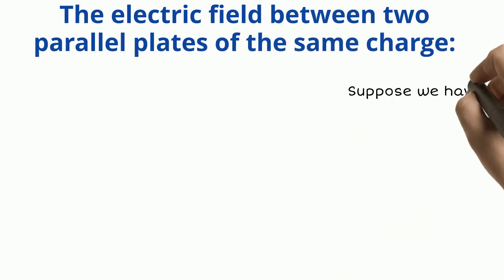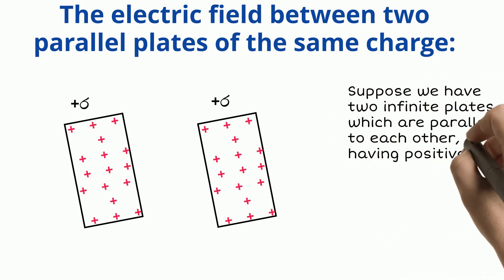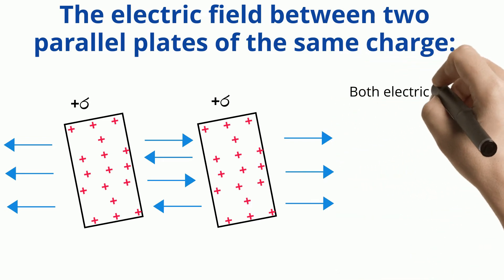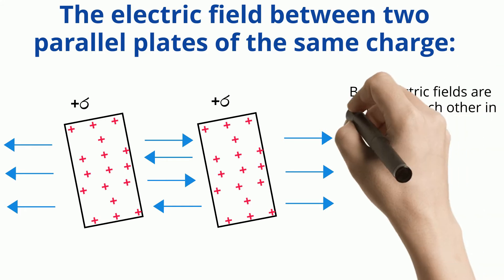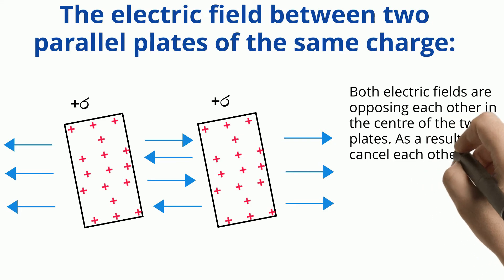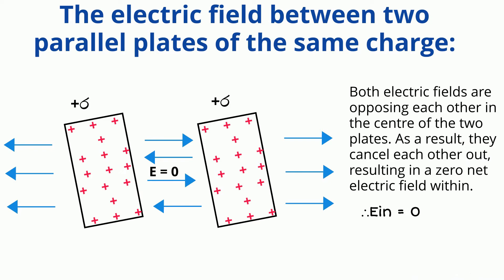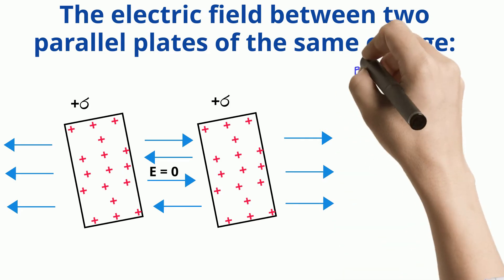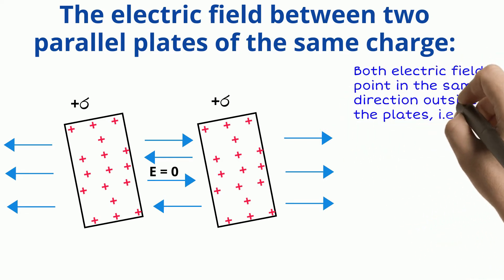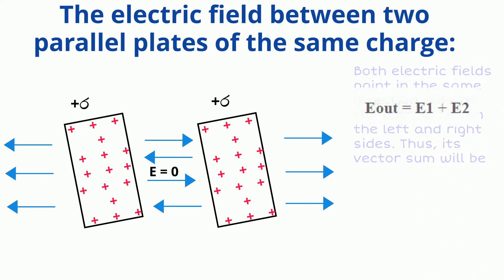Let's see the electric field between two parallel plates of same charge. Suppose we have two infinite plates which are parallel to each other having positive charge density plus sigma. As we can see in the figure, both electric fields are opposing each other in the center of the two plates. As a result, they cancel each other out, resulting in a zero net electric field within — thus E_in is equal to zero. Both electric fields point in the same direction outside the plates, and their vector sum results in sigma upon epsilon zero.